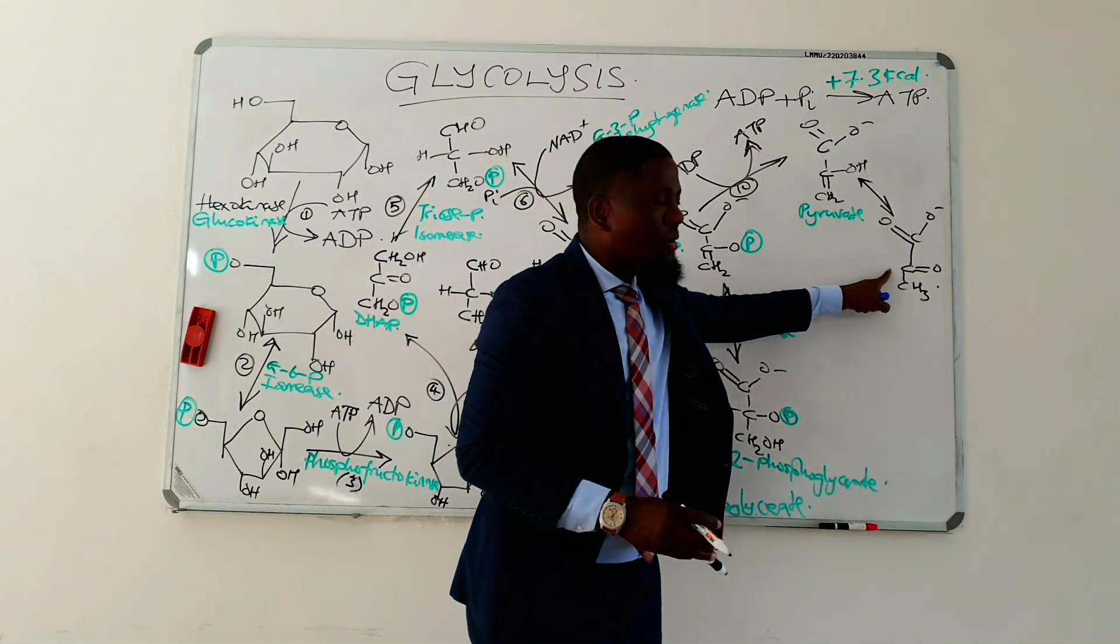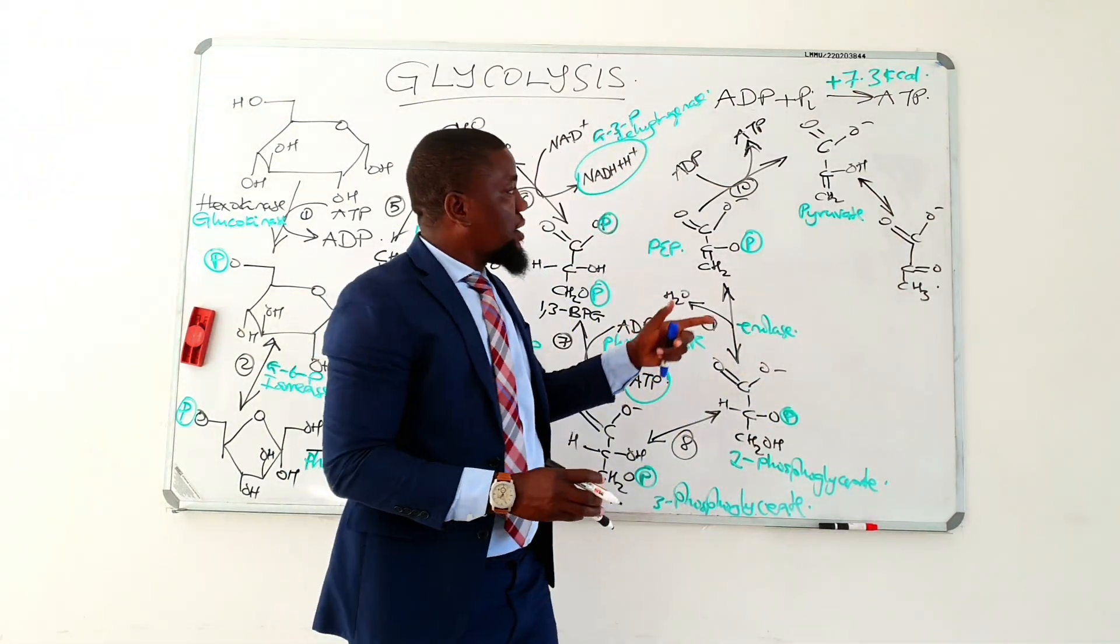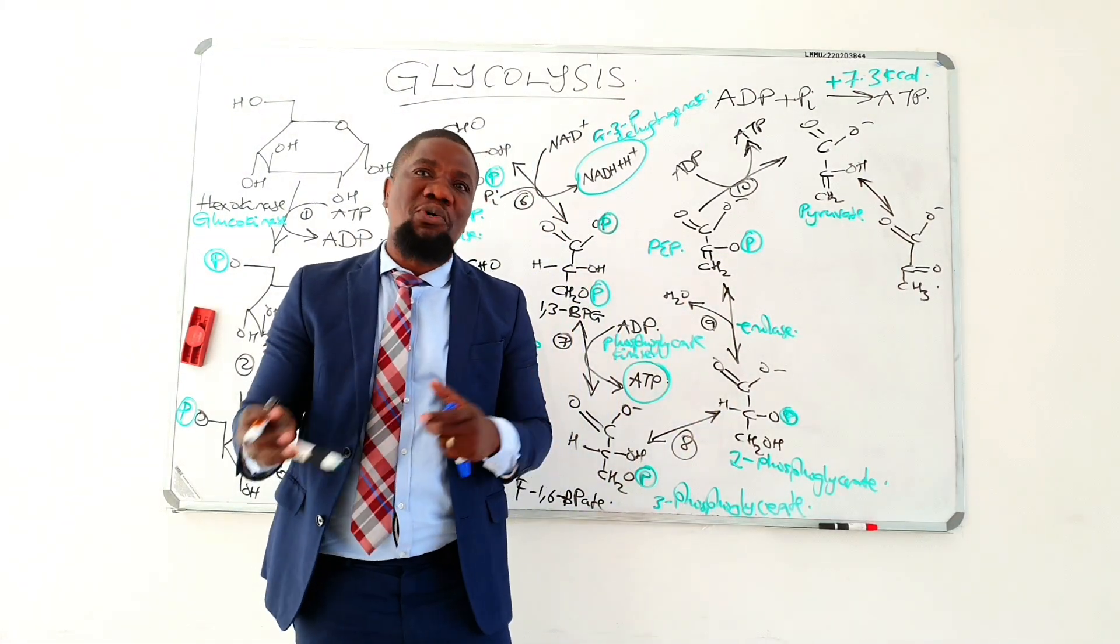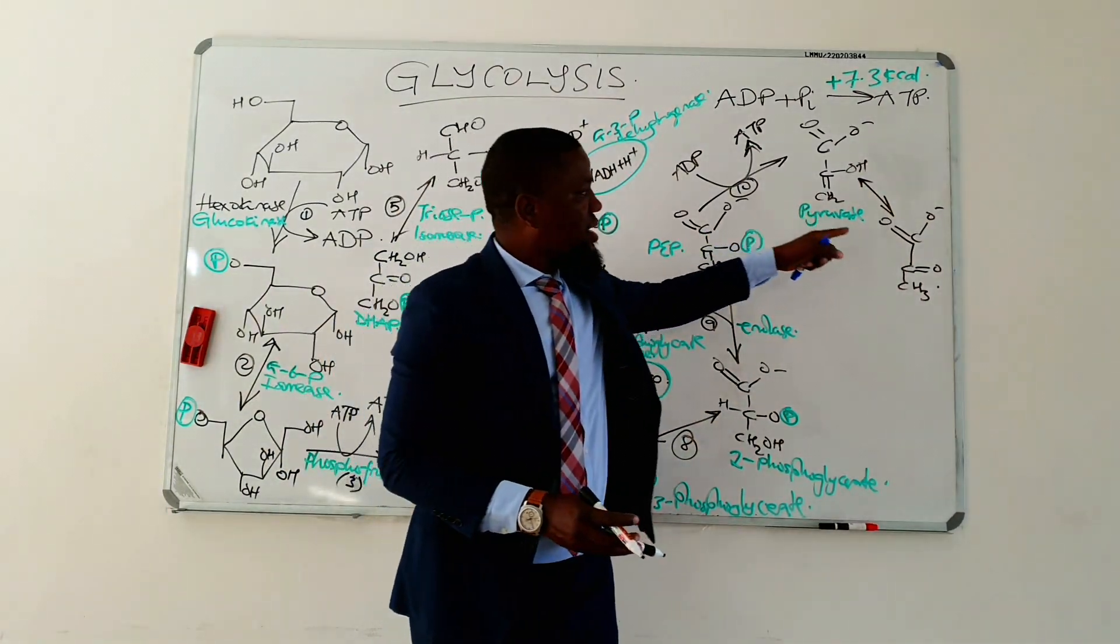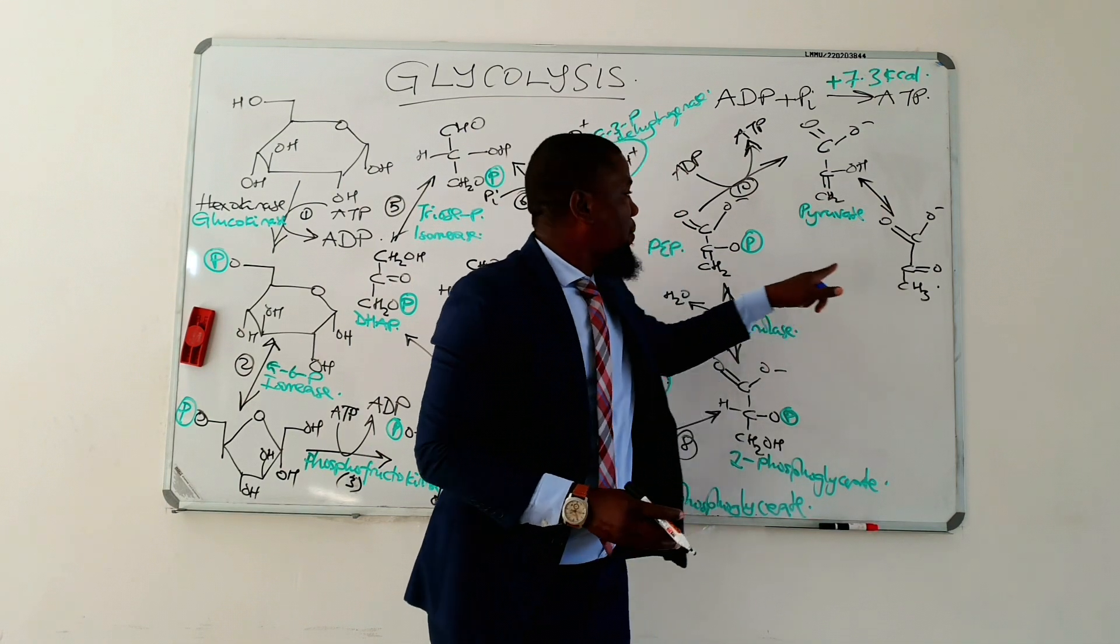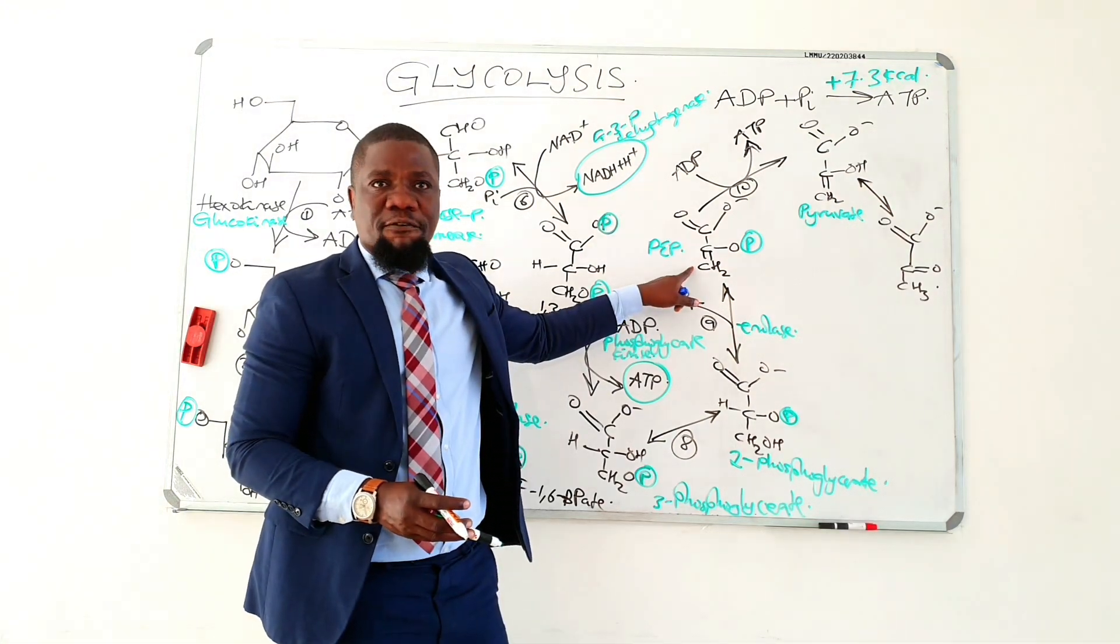It spontaneously tautomerizes into the keto form of pyruvate. So this is your end product. I told you that when the molecule isomerizes, it tends to become more stable. Therefore, this molecule you have here is far much more stable than the molecule that it came from.